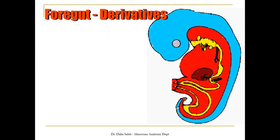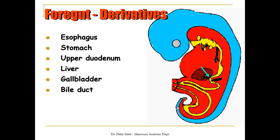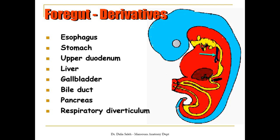The foregut will give rise to the following derivatives: the esophagus, the stomach, the upper half of the duodenum, the liver, the gallbladder, the bile duct, and the pancreas. Also, a diverticulum arises from the foregut called the respiratory diverticulum, which gives rise to the respiratory system. You can check the development of the respiratory system in a previous video.